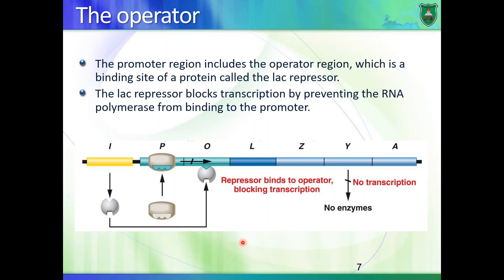There is a region known as the operator that is part of the lac operon. This is a regulatory element that exists between the promoter and the transcription start site. The operator is the binding site of the protein product of the lac I gene. The lac I gene produces a protein known as the lac repressor, which binds right at the operator.